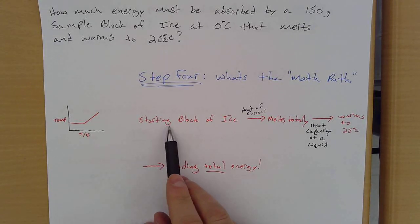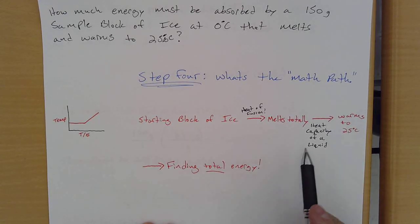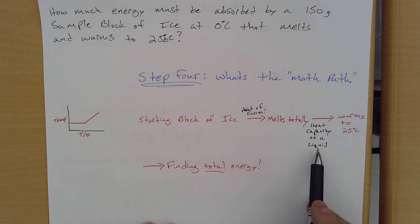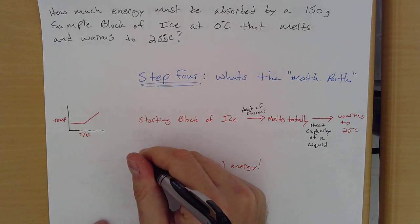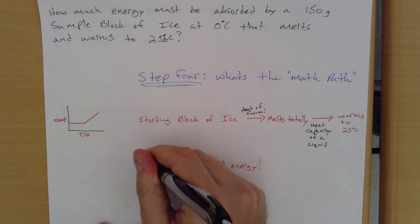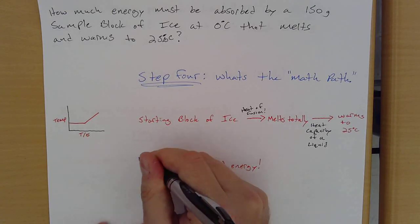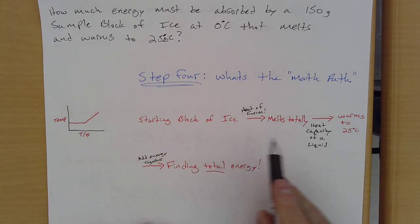So the story is telling me that it's going from a block of ice, it has to melt. Then it's going to warm. And I'm trying to find the total energy. So what equations am I going to have to use to figure all of these things out? So starts as a block of ice and melts. That's a heat of fusion thing. It's melting. Then it's warming to 25 degrees. That's a heat capacity thing. That's a liquid. So I'm putting those on the arrows. And then I have to find the total energy. So how do we find the total of things? We add energy together, because both of these are going to come out with energy.